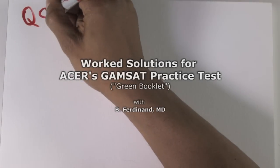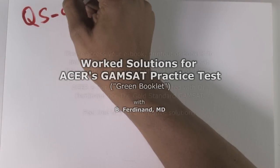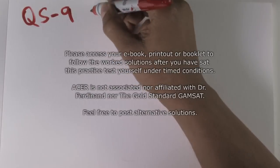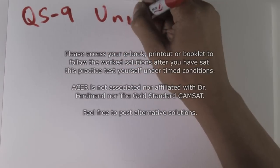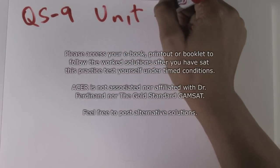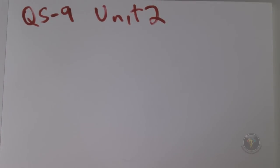Questions 5 to 9, Unit 2. I'm reading the passage and I see a table for electronegativity. I scan through it, underlining any information that I think might be of value.